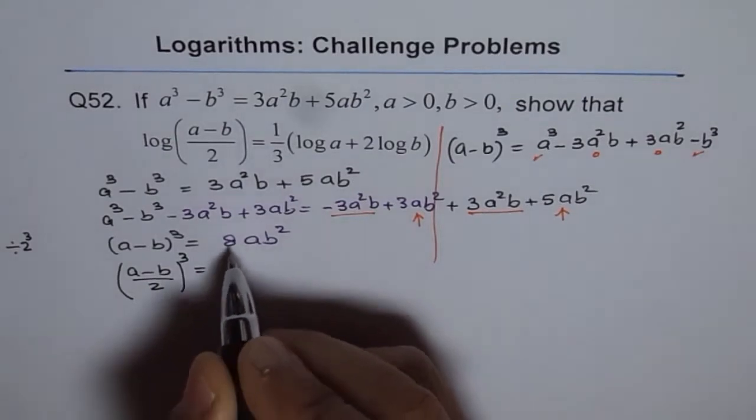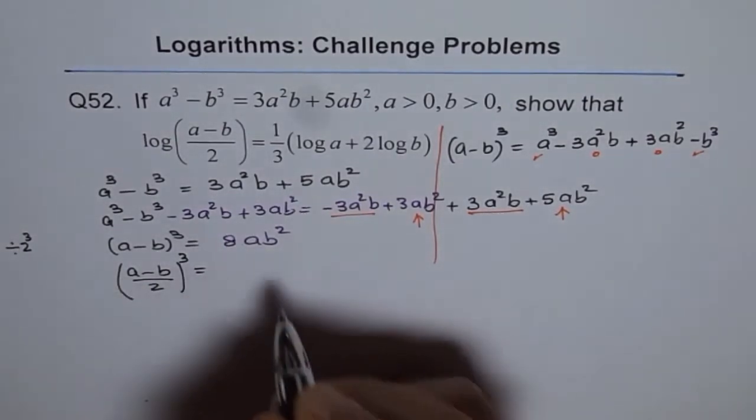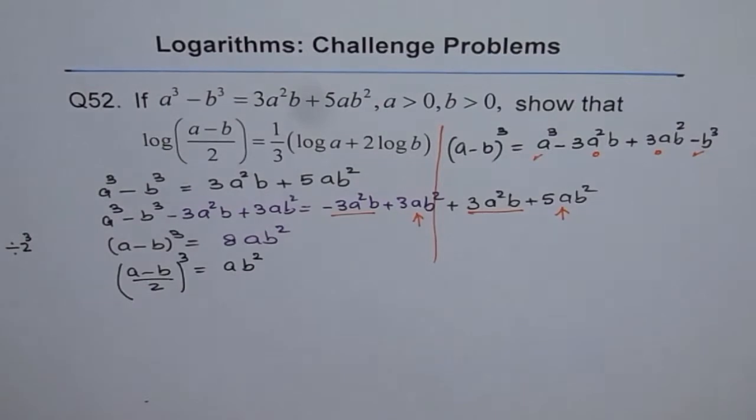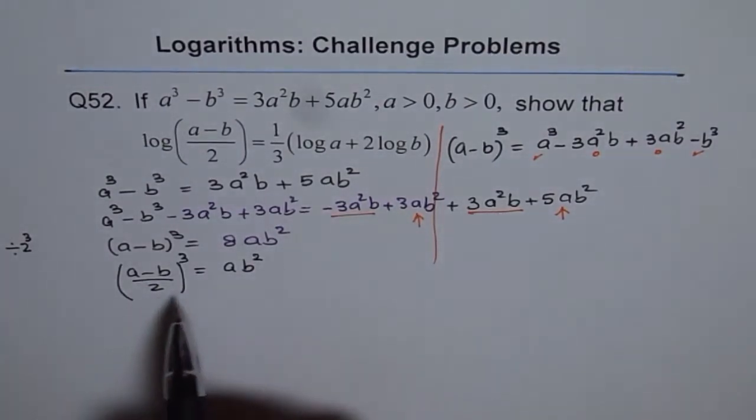So, then I get a minus b over 2 whole cube. Do you see that? And here, 8 divided by 2 cubed is 1. So, you are left with ab square. Perfect. So, we got this.